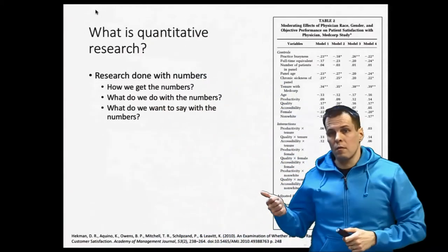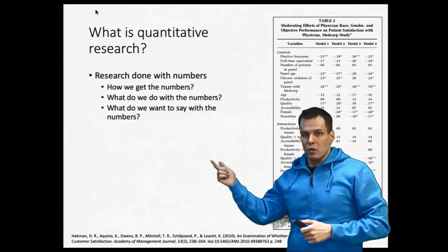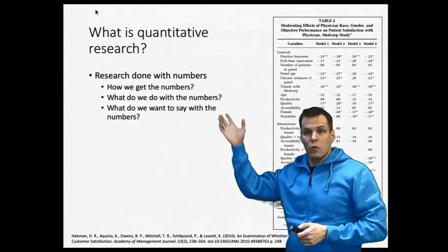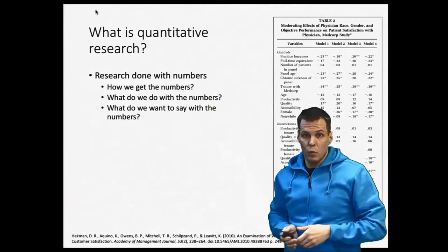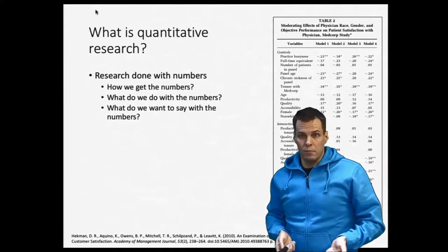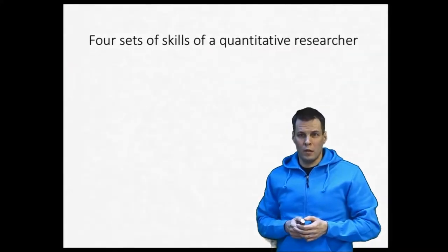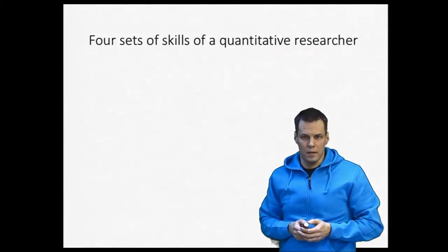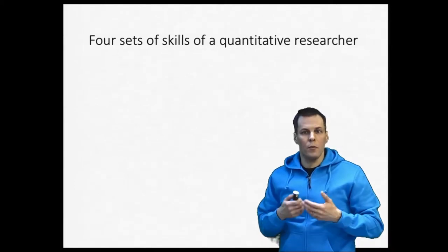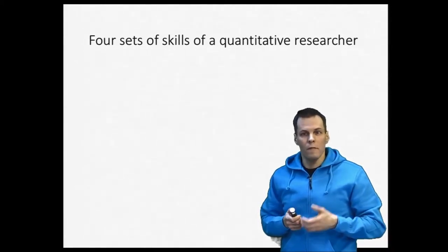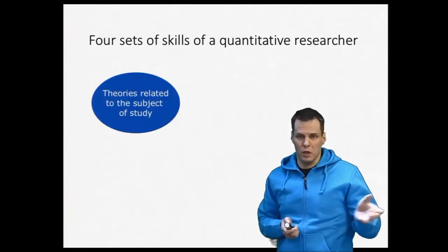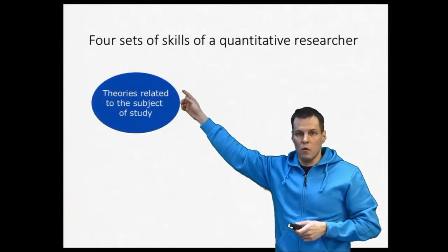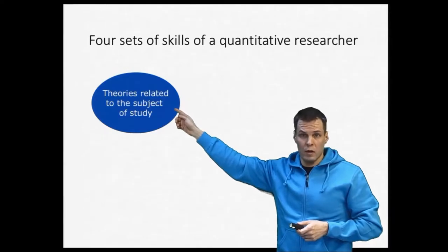So typically when we have a final result like this, we have already answered these three important questions: where do we get the numbers, what do we do with the numbers, and what do we want to say with the numbers? And of course these questions are interrelated, so you can't really answer one without another. If you want to do quantitative research, you need to have some basic skills. My personal opinion is that you need four different skills. First of all, you need to understand the subject of study. So you need to understand what are the most important theories of the phenomenon that you're studying.